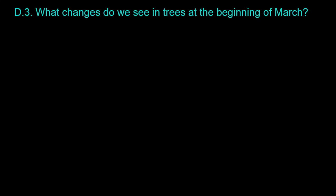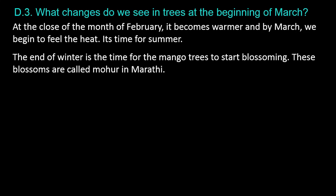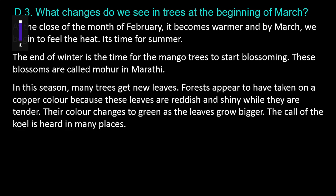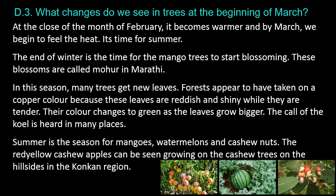Question D.3: What changes do we see in trees at the beginning of March? At the close of the month of February, it becomes warmer and by March we begin to feel the heat — it's time for summer. The end of winter is the time for the mango trees to start blossoming; these blossoms are called moher in Marathi. In this season, many trees get new leaves. Forests appear to have taken on a copper color because these leaves are reddish and shiny while they are tender. Their color changes to green as the leaves grow bigger. The call of the koel is heard in many places. Summer is the season for mangoes, watermelons, and cashew nuts. The red-yellow cashew apples can be seen growing on the cashew trees on the hillsides in the Konkan region.